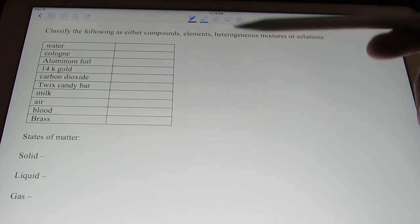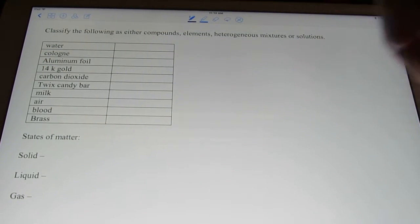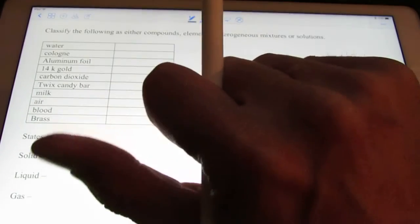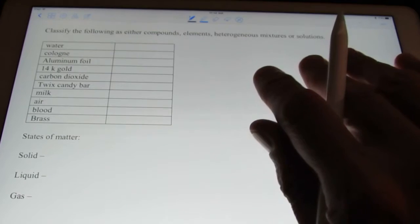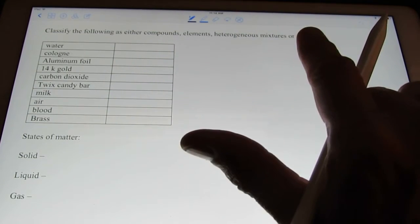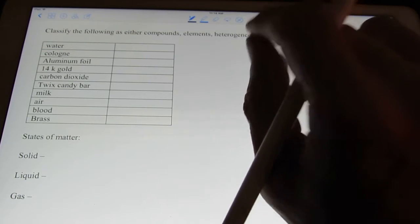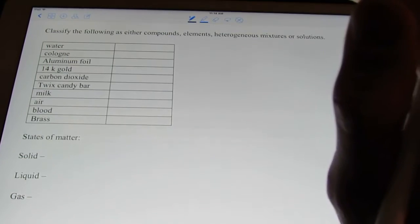If you remember, we classified matter into pure substances or mixtures. And we classified pure substances into either elements or compounds. And then mixtures we classified into either heterogeneous or homogeneous. And then we further subcategorized heterogeneous mixtures into either colloids or suspensions.